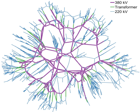Electrical grids vary in size from covering a single building through national grids which cover whole countries, to transnational grids which can cross continents. Although electrical grids are widespread, 1.4 billion people are not connected to an electricity grid. Electrical grids can be prone to malicious intrusion or attack, thus there is a need for electric grid security. As electric grids modernize and introduce computers, cyber threats also start to become a security risk.